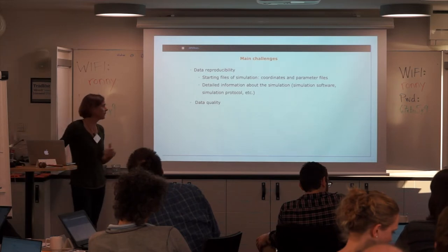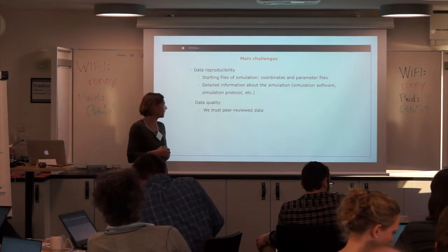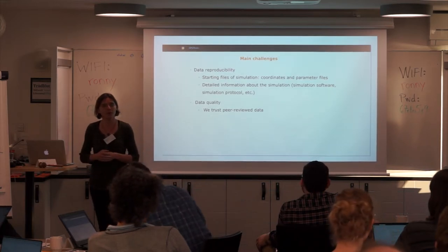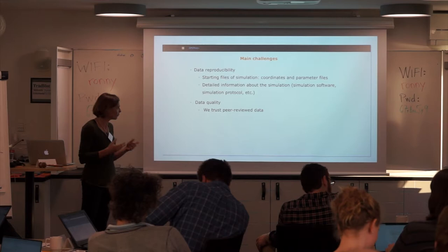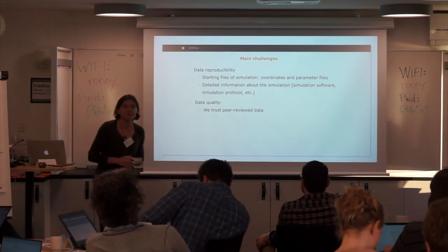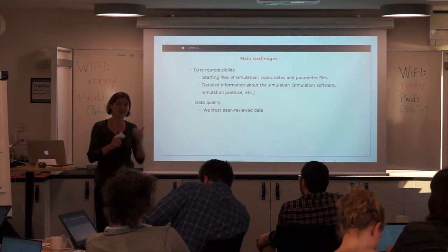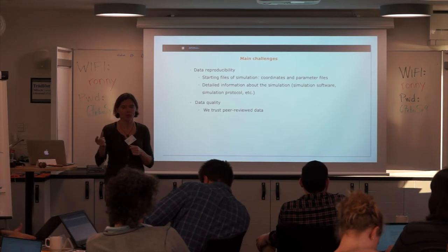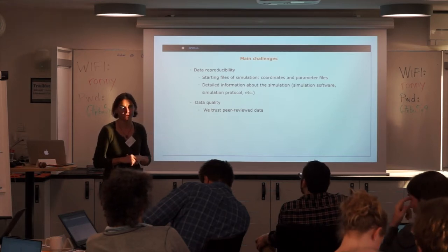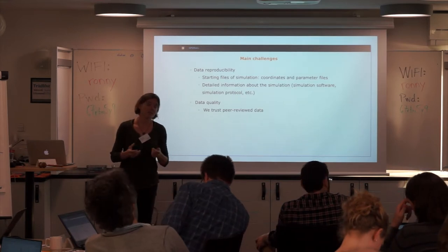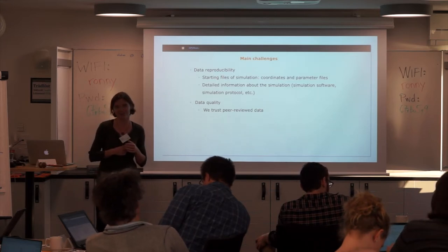Data quality: what is going to be uploaded by the people? We limit it at the moment to peer-reviewed data or data that are going to be published, because we believe there should be a certain quality provided. How do you decide if something is going to be published? People upload and can use a private link — it's not published yet — they give this link to the reviewer, and once the publication is accepted, the data is published. If something is not accepted after some point, you just delete it. This decision is for data quality and also storage space.